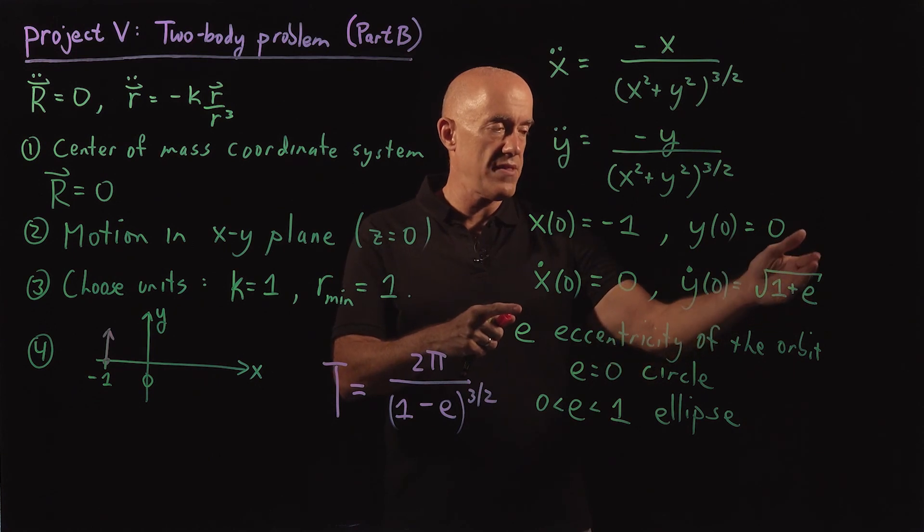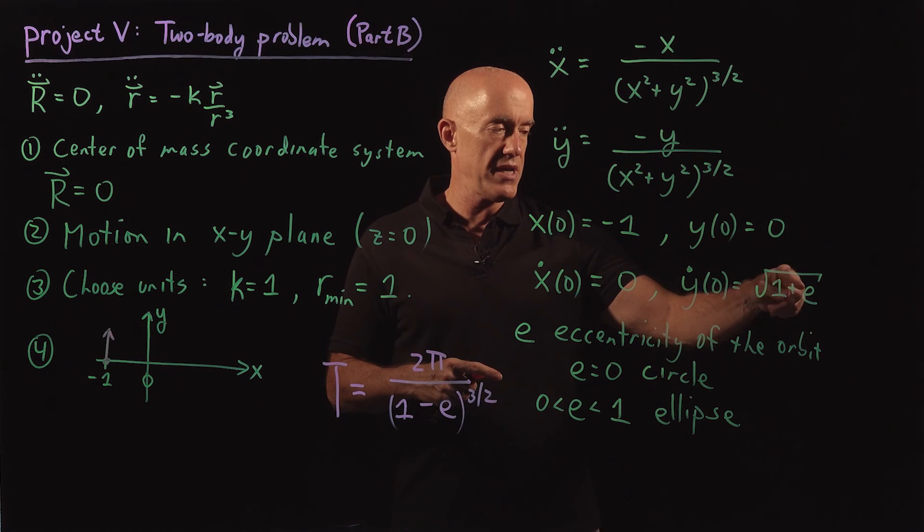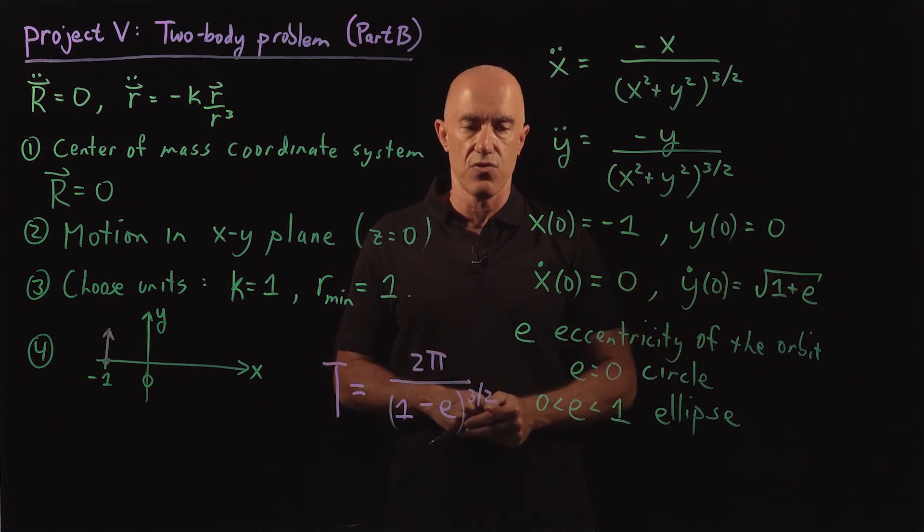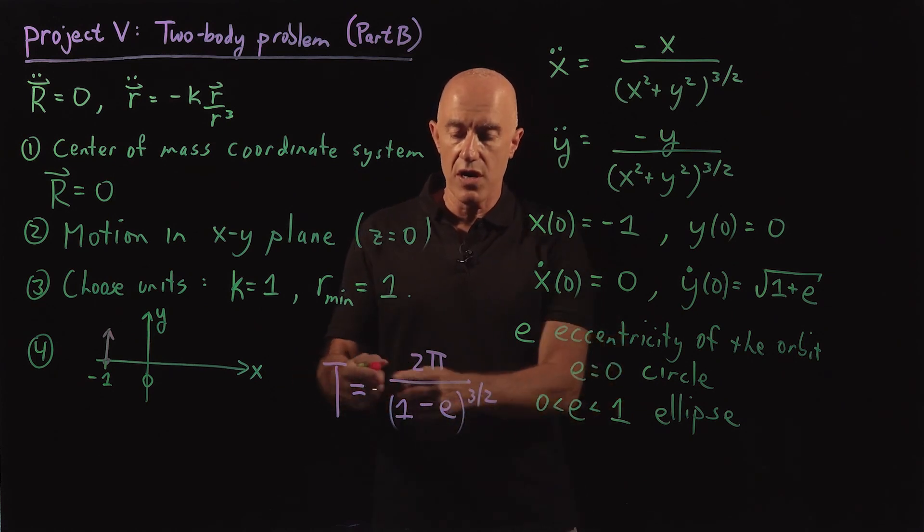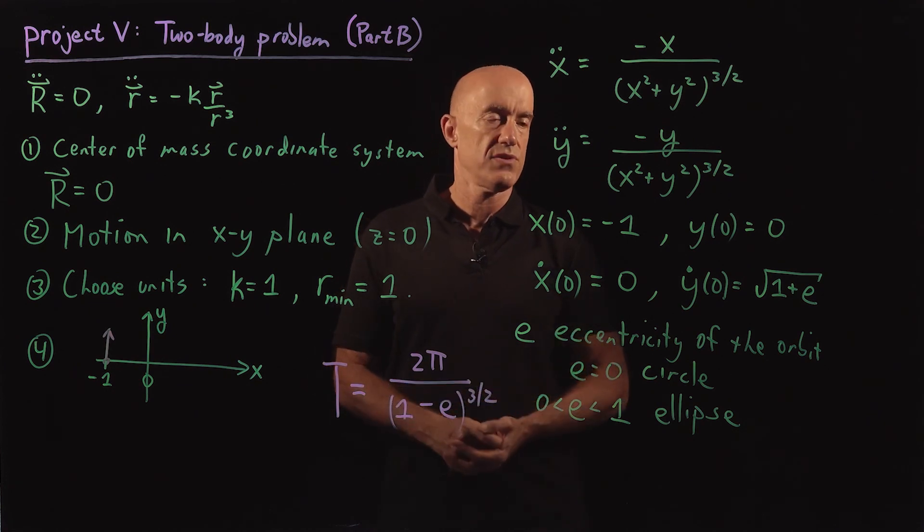You can vary the type of orbit that you consider by varying e between values say between zero and one for a closed orbit. You know how long you have to evolve the solution to get one period of the solution.